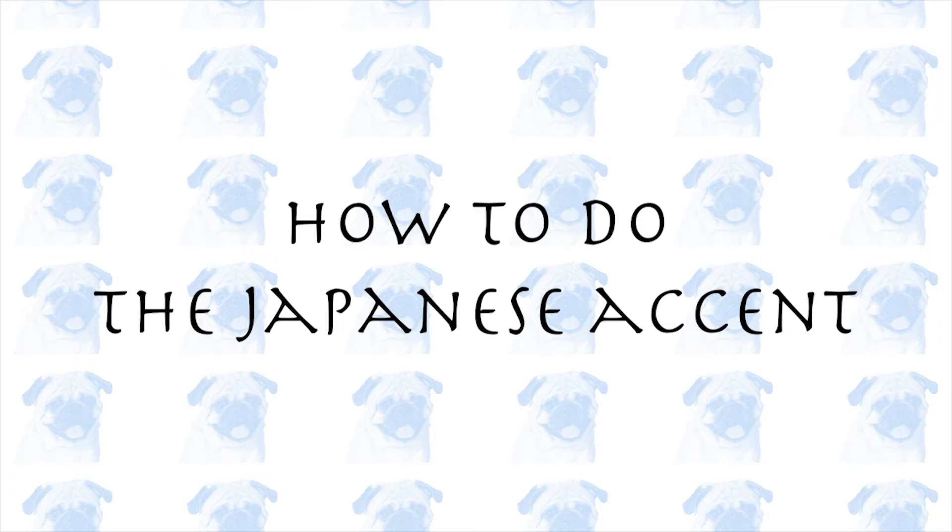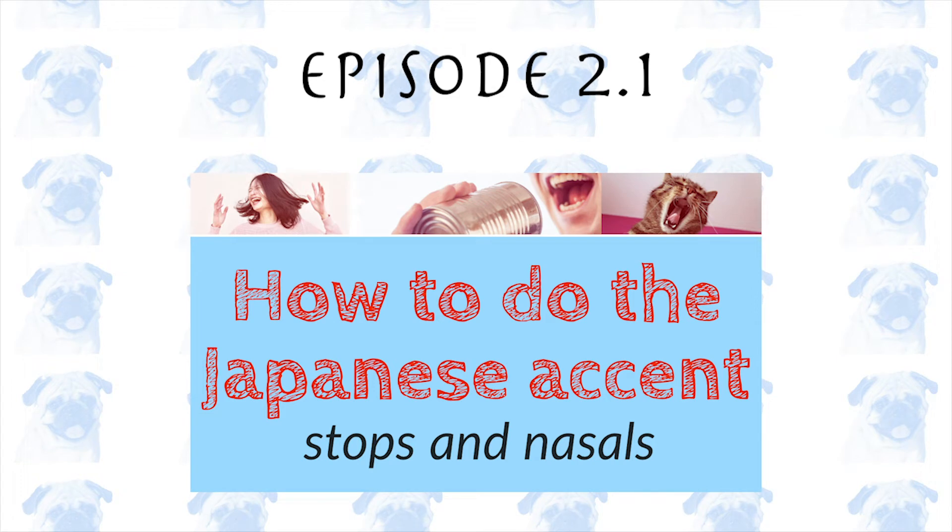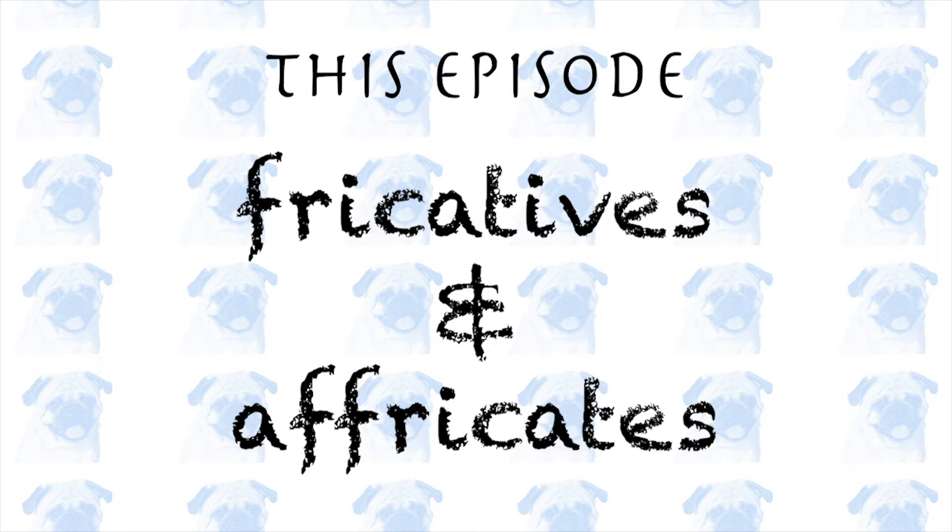Welcome to episode 2.2 of How To Do The Japanese Accent. In the previous episode, I talked about how Japanese speakers would pronounce the English stops and nasals. In this episode, I will explain how the English fricatives and affricates would be pronounced by Japanese speakers.